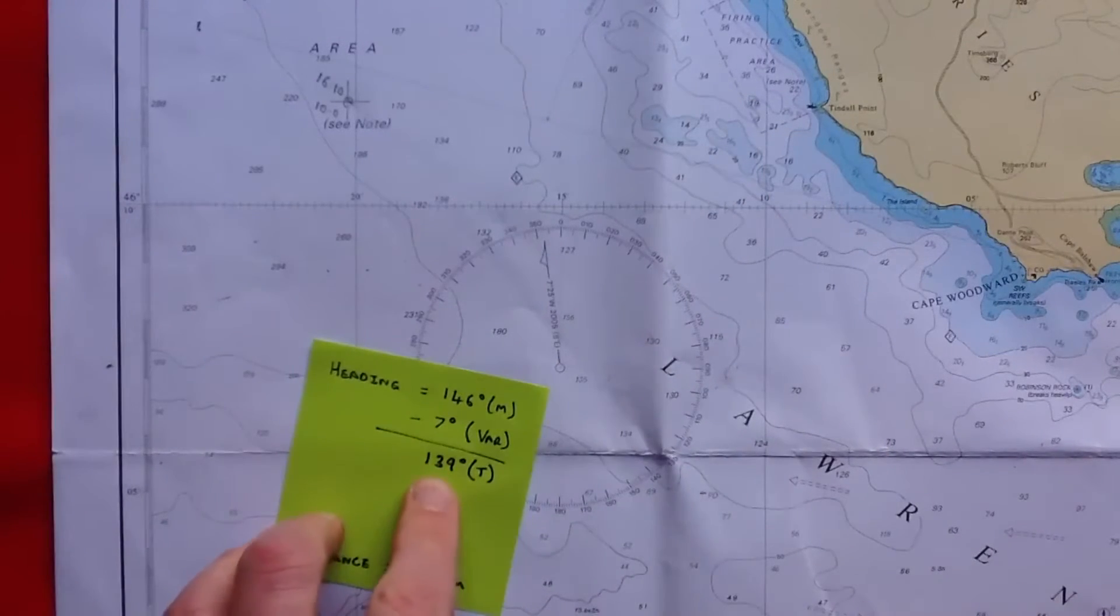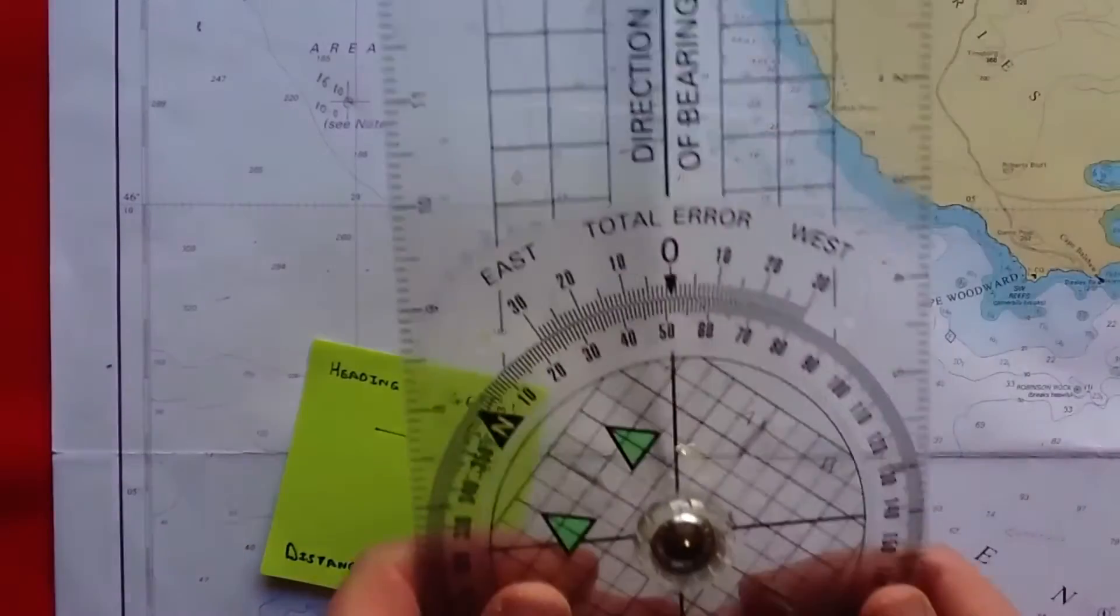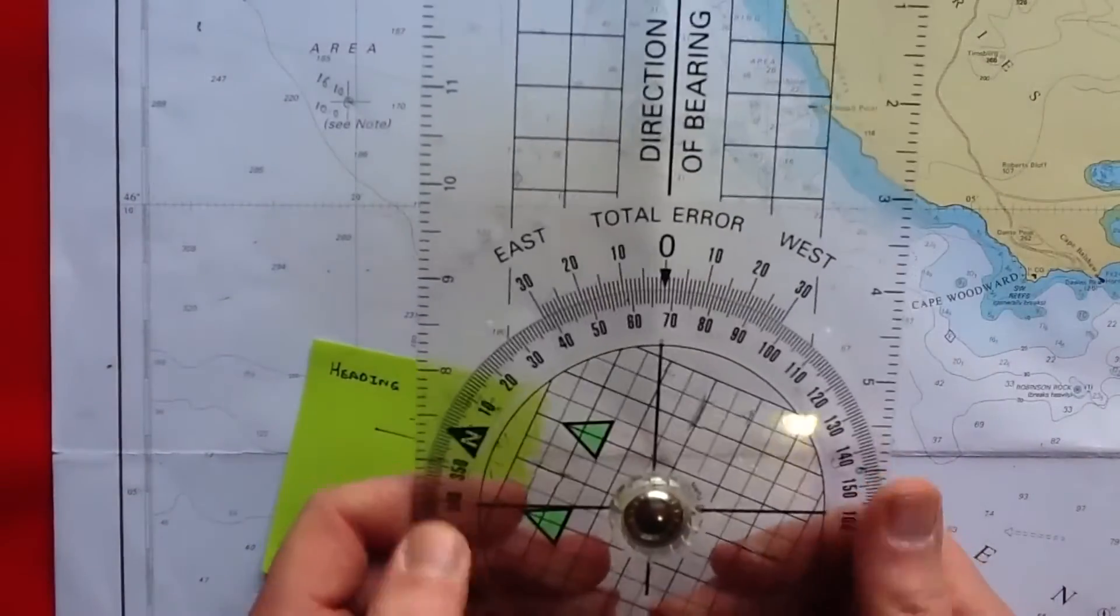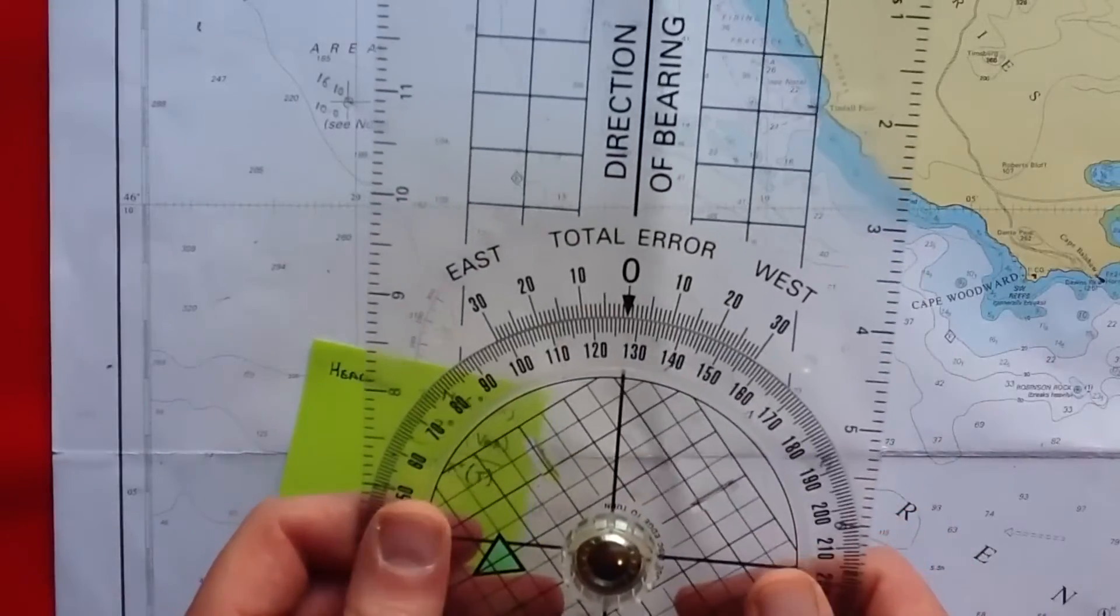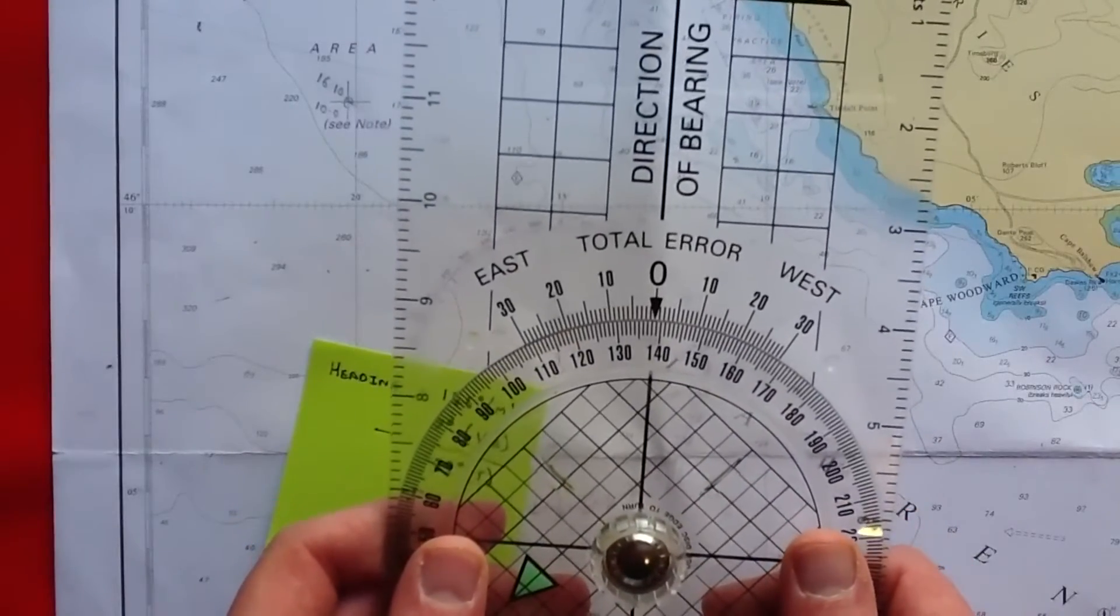Now we've got this bearing, 139 degrees. We take our plotter and set in 139 degrees like so.